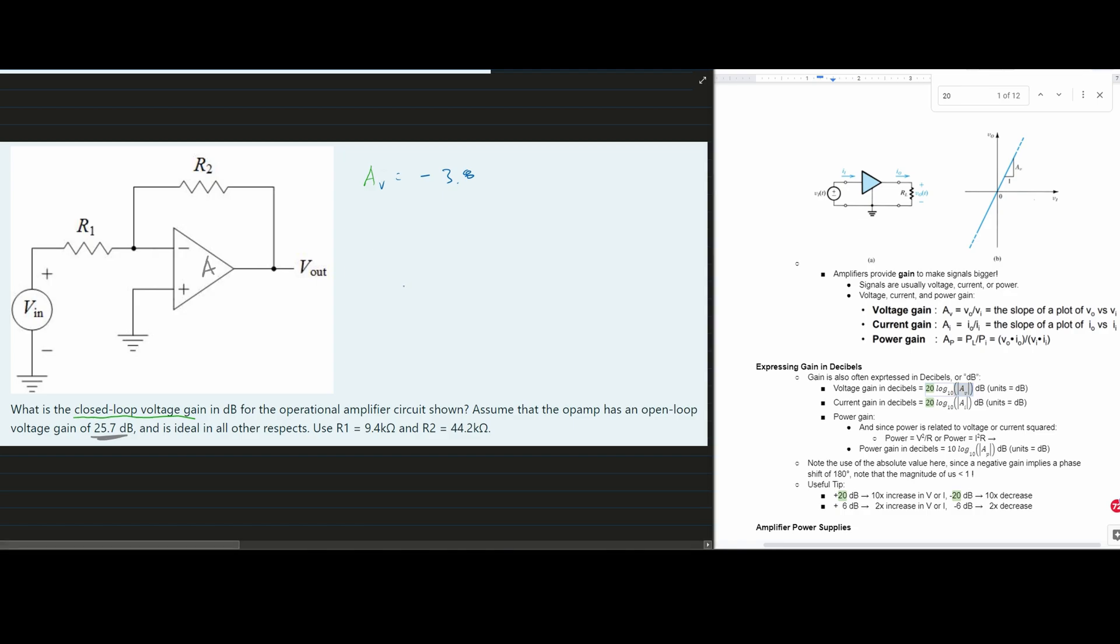So for this specific problem, the voltage gain in decibels, which is equivalent to the closed loop gain, which is what we wanted to find, is about 11.7. It might be a little bit off because of rounding error, but that's how you look at this problem and anything like it.